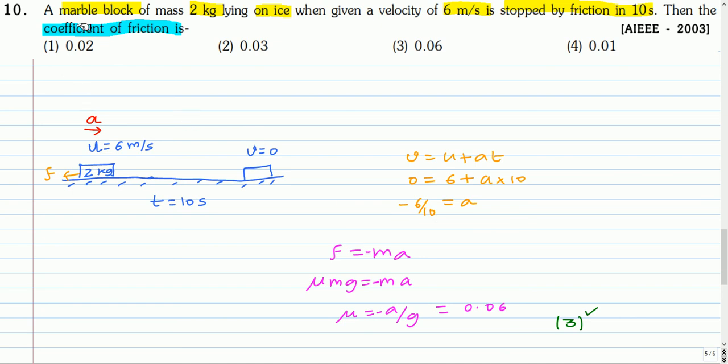This is the next question. A marble block of mass 2 kg lying on ice, when given a velocity of 6 m/s, is stopped by friction in 10 seconds. Then the coefficient of friction is.